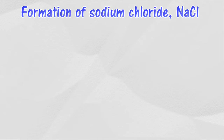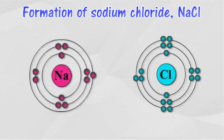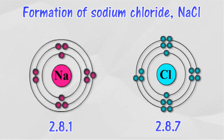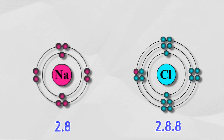The electron arrangement of a sodium atom is 2.8.1. The electron arrangement of a chlorine atom is 2.8.7. Sodium atom releases one electron to form a positively charged sodium ion.